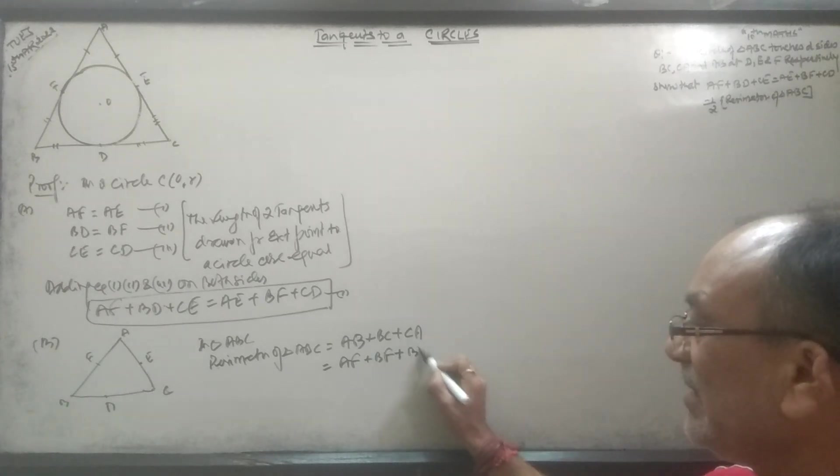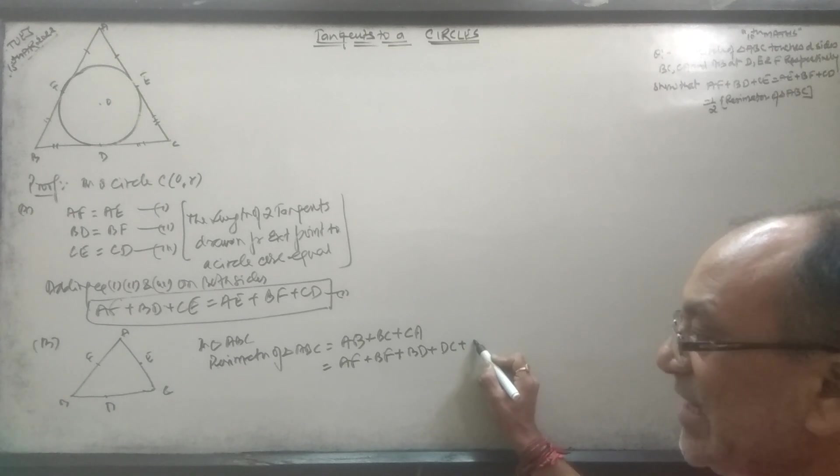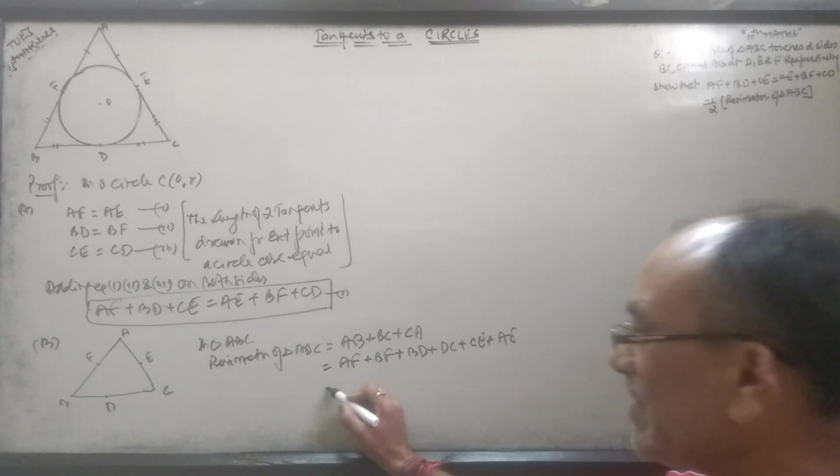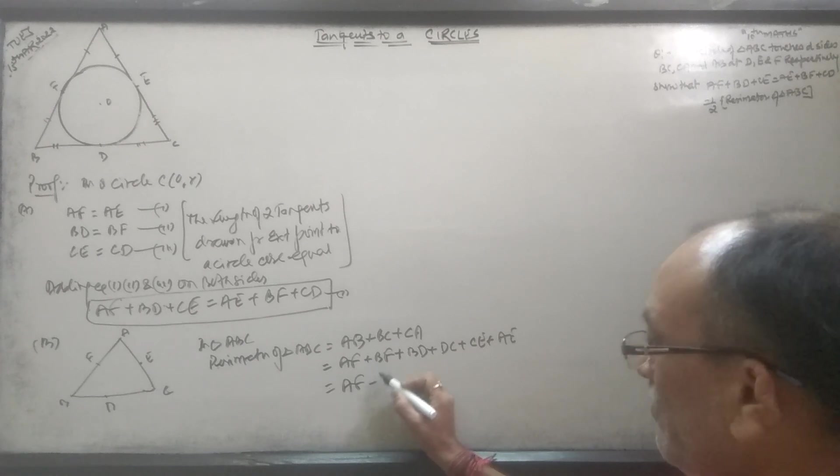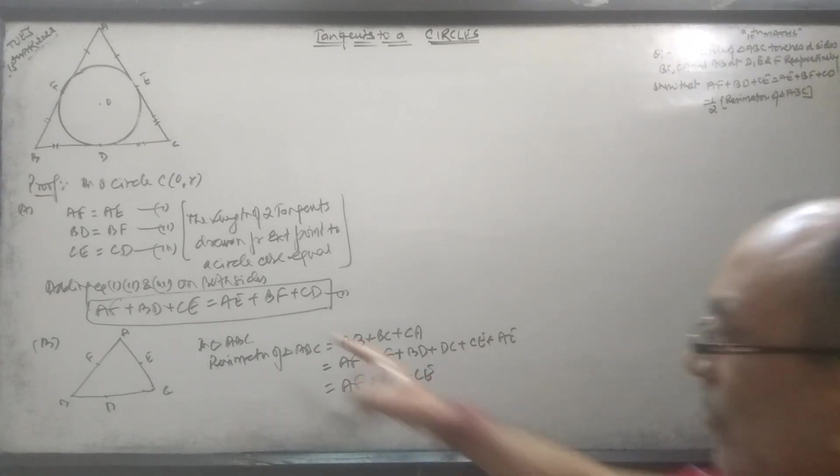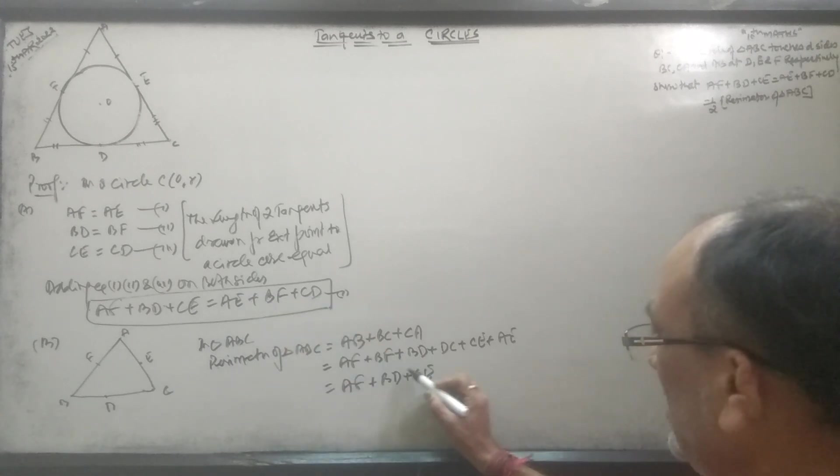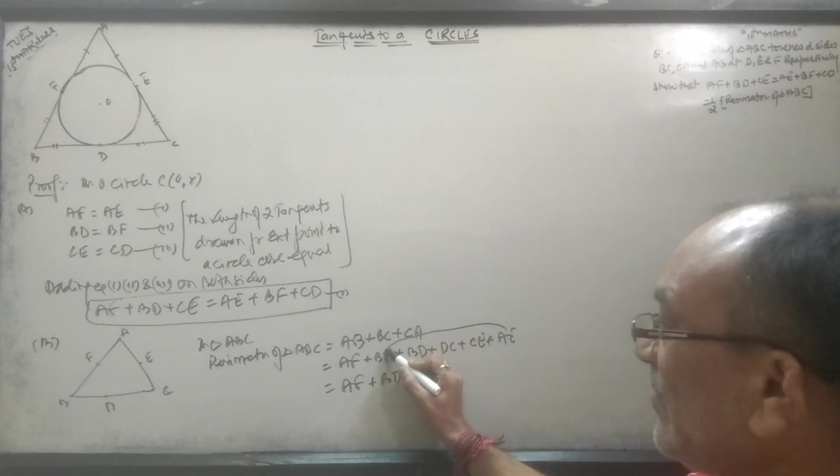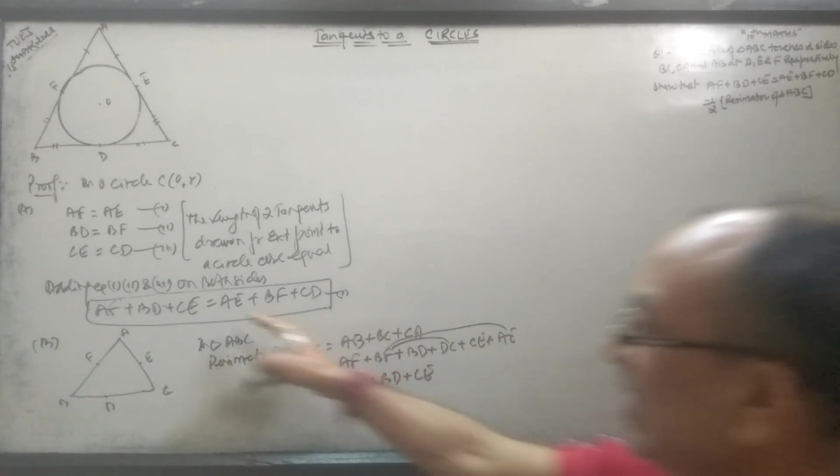BC equals BD plus DC, and CA equals CE plus AE. So the perimeter is AF plus BF plus BD plus DC plus CE plus AE.